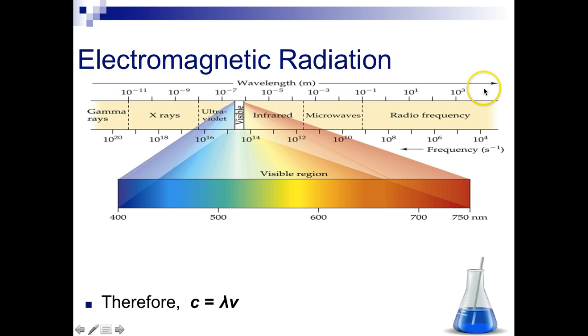Wavelength increases as you go to the right. So radio waves have high wavelength but low frequency. Gamma rays have a low wavelength and a high frequency.